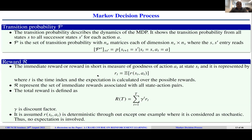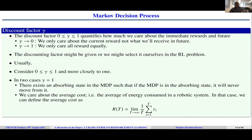The discount factor gamma lies between zero and one, quantifying how much we care about immediate versus future rewards. If gamma equals zero, we only care about the current reward; if gamma approaches one, all rewards are valued equally. The discount factor may be given or chosen. It equals one in two cases: when there is an absorbing state in the MDP — where the process stops — or when the average cost is considered, such as average energy consumption in robotic systems.